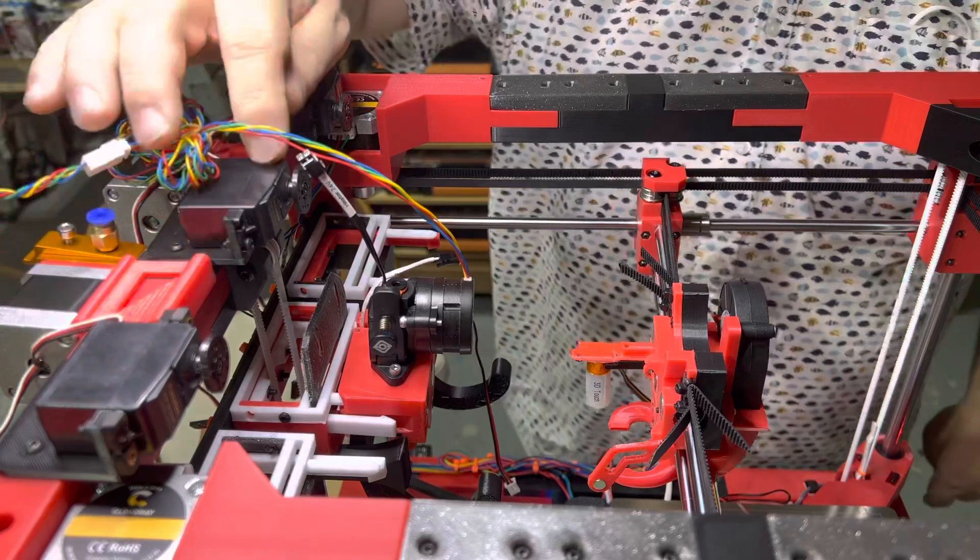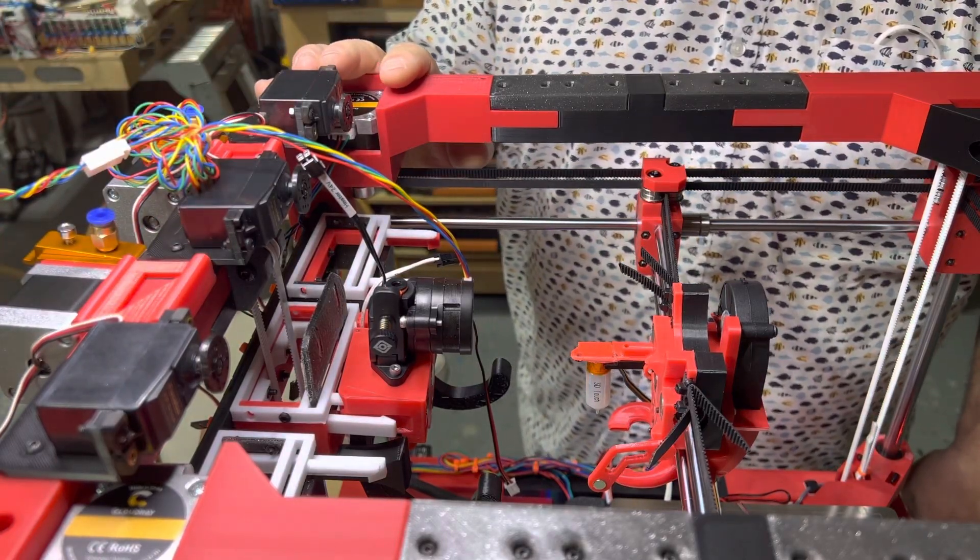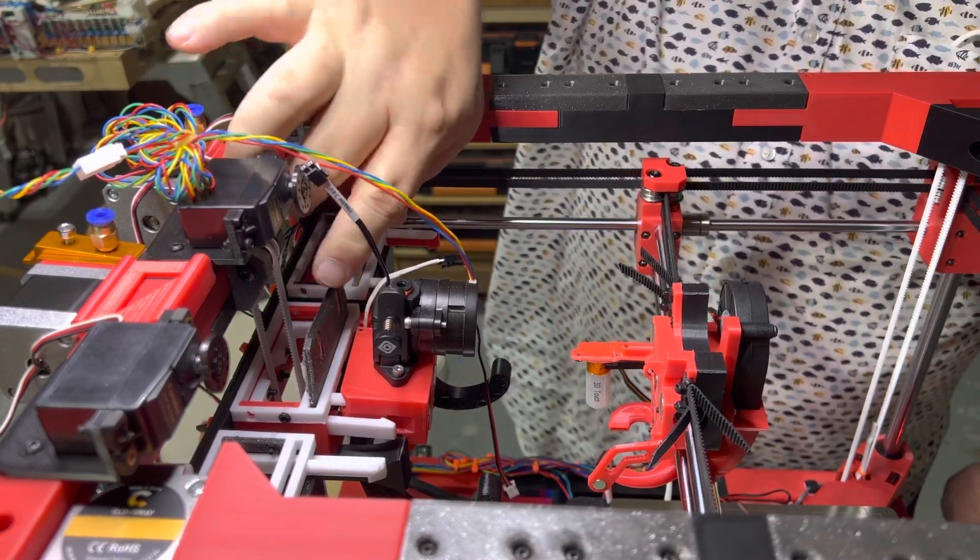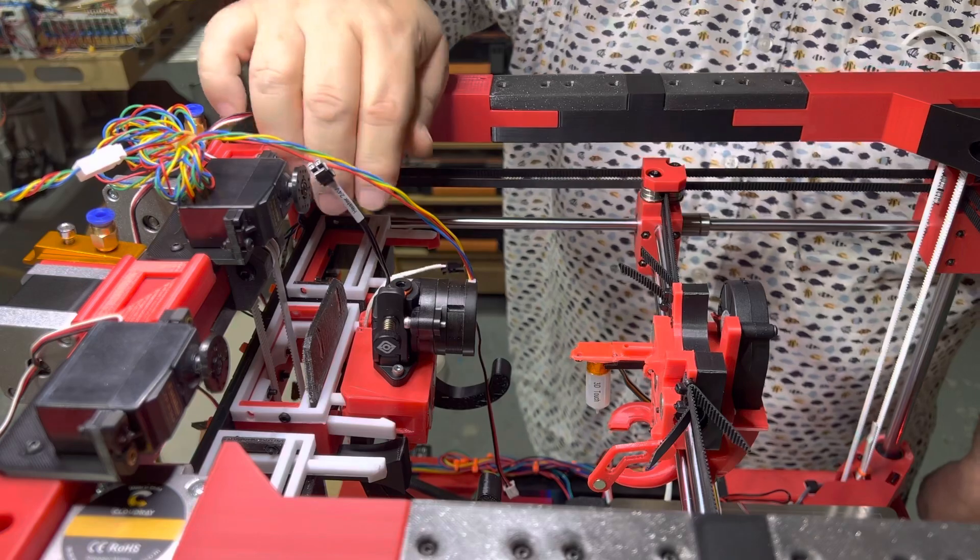You can see I've mounted three servos at the top. That's what I'm going to use to drive these openers. As that presses down, as you can see, it opens up these clips.